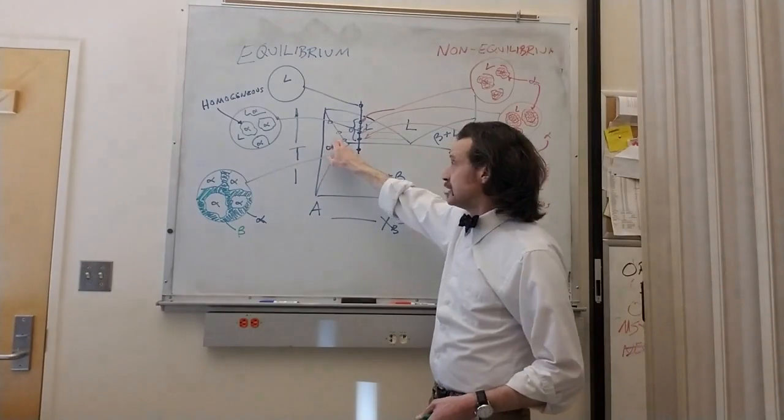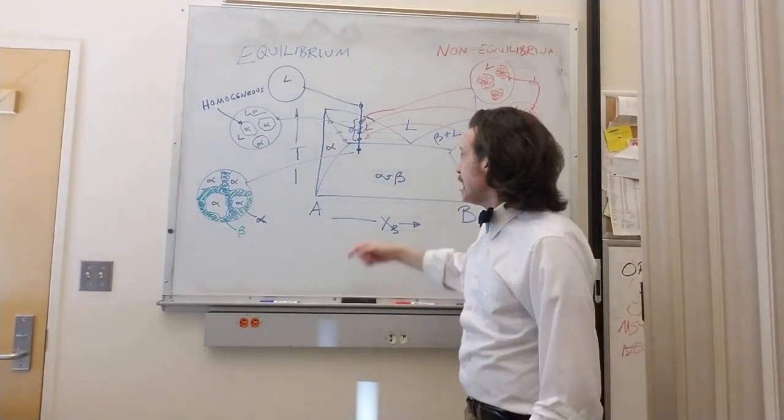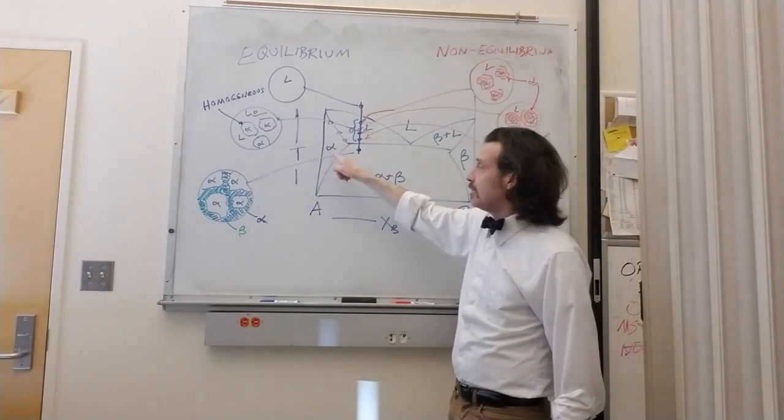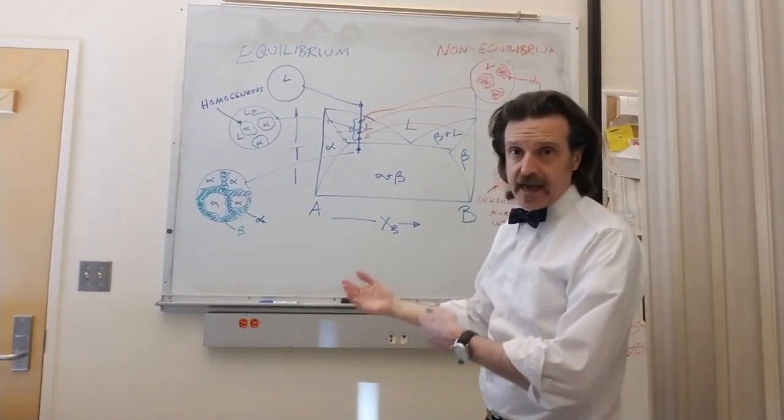As we cool further, the composition of alpha has even less A in it.